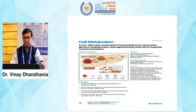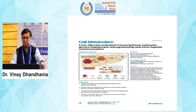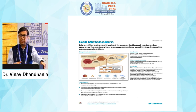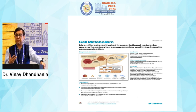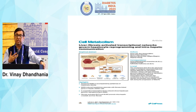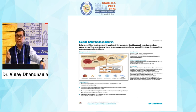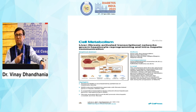An article published in Cell Metabolism describes how liver fibrosis-activated transcriptional networks govern hepatocyte reprogramming and intrahepatic communications — what is called crosstalk. Just like in sepsis, where cytokines cause multi-organ failure through crosstalk between kidney, heart, neural system, and liver, similarly we have a crosstalk between liver and pancreas and other organs. We know the common link of NAFLD, insulin resistance, abdominal obesity, metabolic syndrome, and type 2 diabetes.